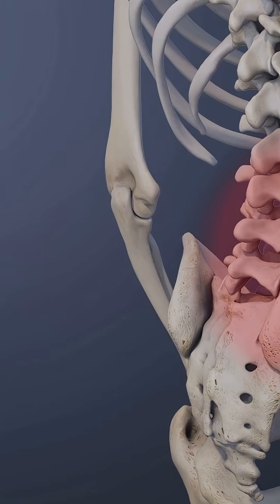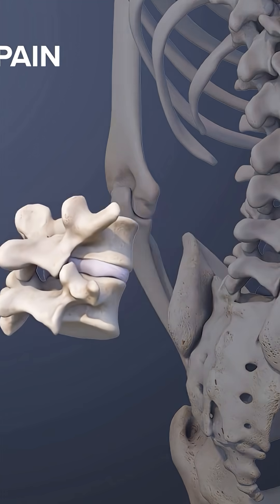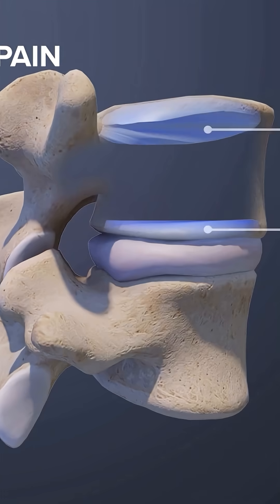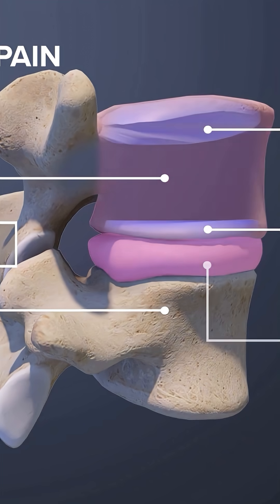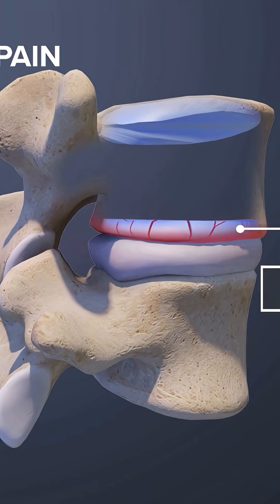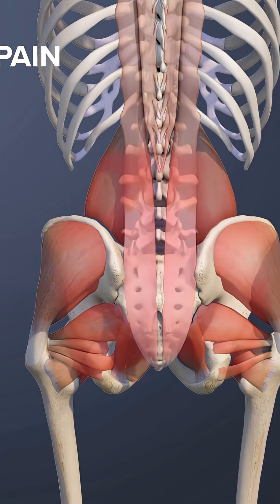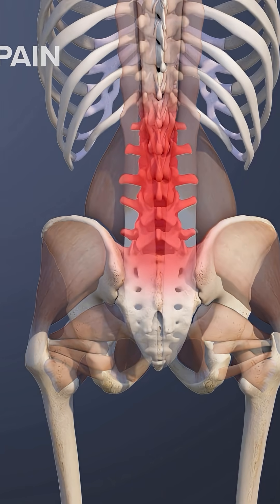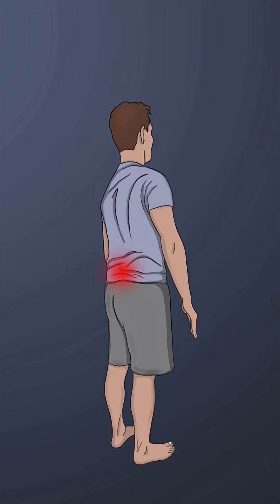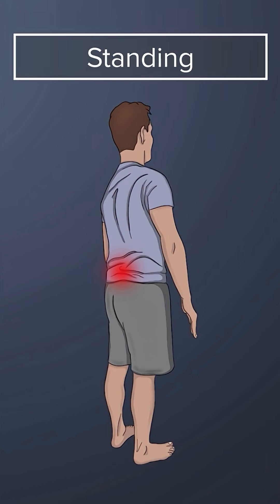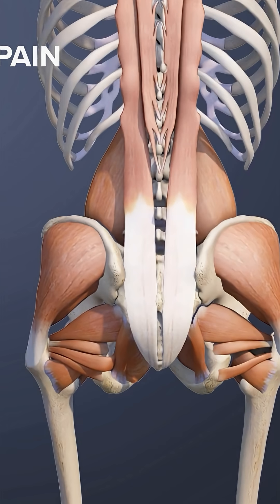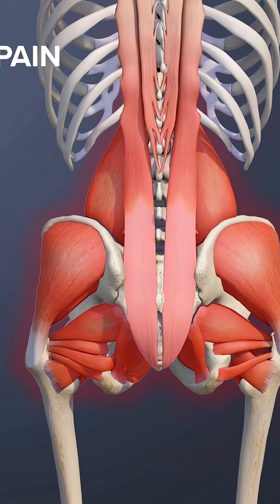Another type of lower back pain is called vertebrogenic pain, which occurs when the vertebral end plate, situated between the vertebral body and the intervertebral disc, becomes damaged. This pain is felt as a persistent, dull ache or burning pain deep in the lower back area. Vertebrogenic pain usually flares up while sitting, standing, and bending the spine forward. In some cases, the pain may spread into the tissues surrounding the spine and the buttock.